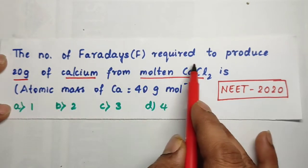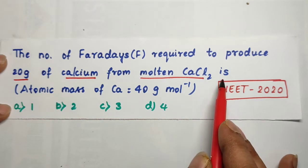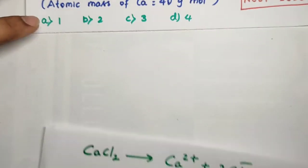The number of Faradays required to produce 20 grams of calcium from molten calcium chloride. Molten calcium chloride. Look at this.